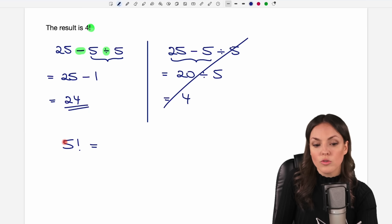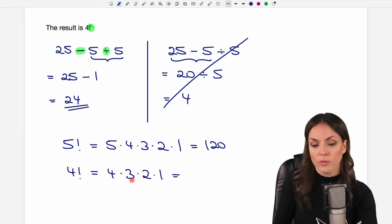And this means that you start at the 5 and you multiply downwards. So 5 times 4 times 3 times 2 times 1. And if you calculate this, you get a result of 120. So let's see what 4 factorial would be in our case then. We start at the 4 and we multiply downwards times 3 times 2 times 1. So 4 times 3 equals 12 times 2 equals 24 times 1 still equals 24.